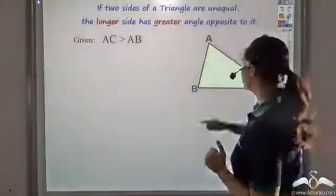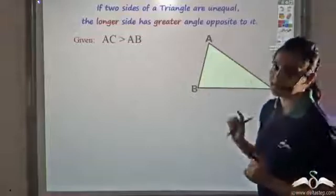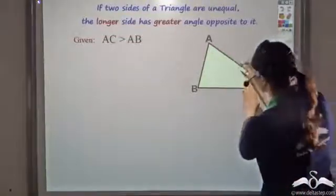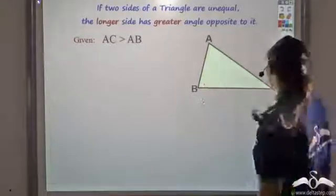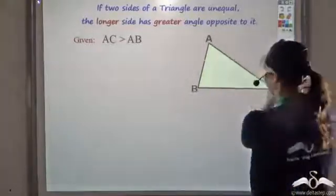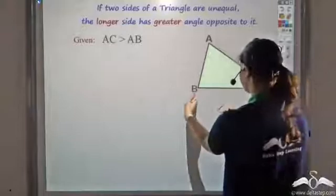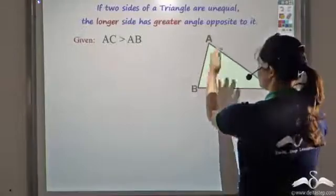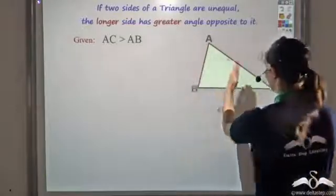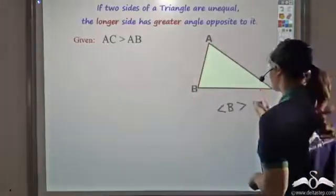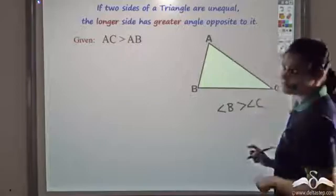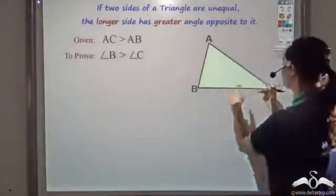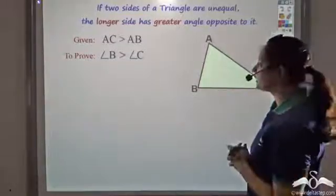What I want to prove is that the greater side has a greater angle opposite to it. Since AC is the greater side, the angle opposite to it is angle B. AB is the smaller side and the angle opposite to AB is angle C. So I want to prove that angle B is greater than angle C.